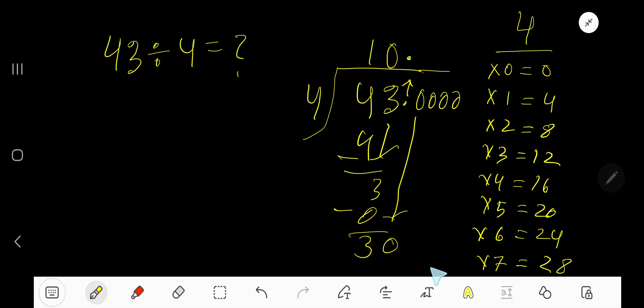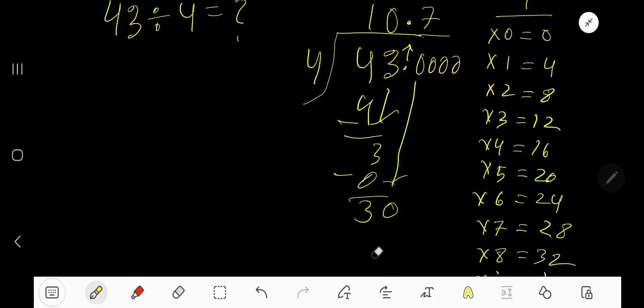So 4 goes into 30 how many times? 4 goes into 30 seven times. That gives you 28. 7 times 4 is 28. Subtract, you get 2.